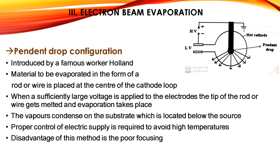The first configuration is the pen and drop configuration, as shown in the figure. It was introduced by Holland, who received a patent from the British government for this method. The material to be evaporated, in the form of a rod or wire, is placed at the center of a cathode loop. When a sufficiently large voltage is applied to the electrodes, the tip of the rod or wire melts and evaporation takes place. The vapors condense on the substrate located below the source. Proper control of the electric supply is required, and the disadvantage of this method is poor power focusing.